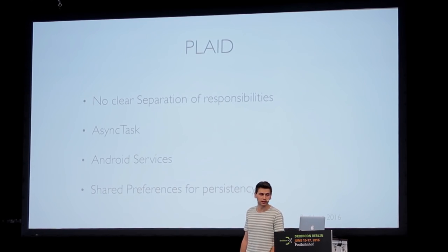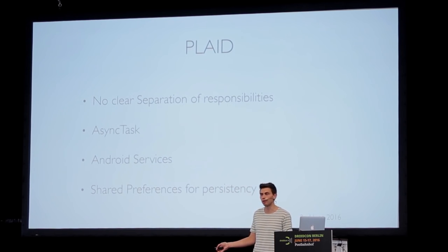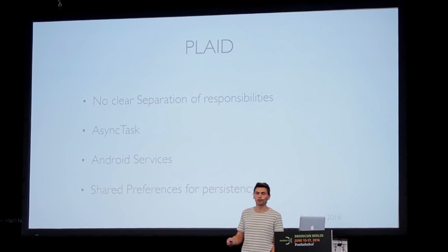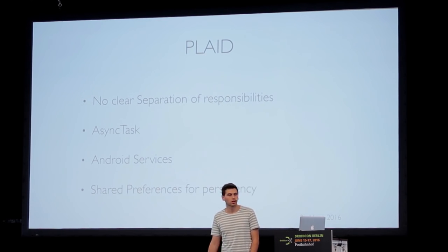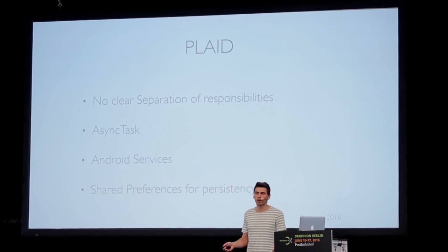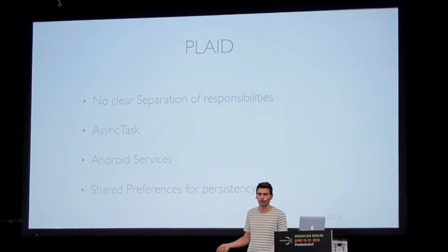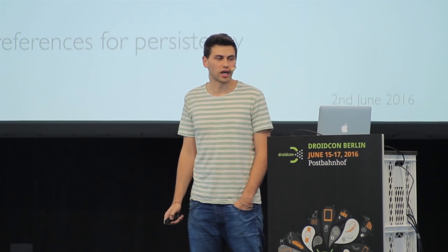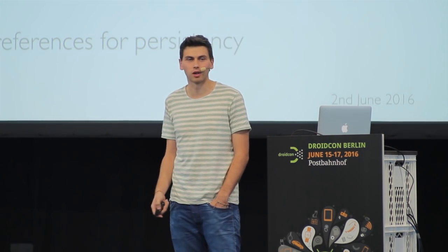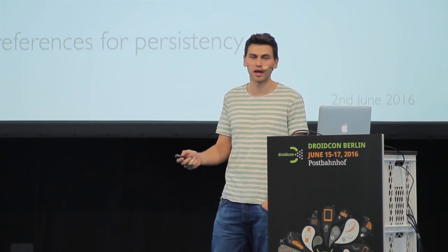The problems: no clear separation of concerns. It uses AsyncTask, which is not a problem per se, and also Android Services. But from my point of view it's not perfect to use SharedPreferences for storing a list of enabled and disabled sources. People do that to quickly get started, but a database would be better — and we will actually refactor it to use a database.